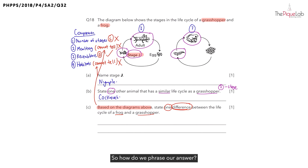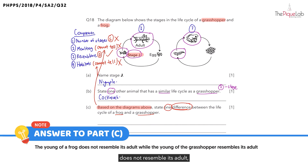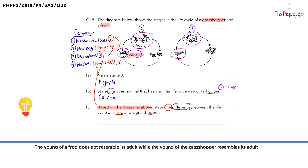So how do we phrase our answer? We should say that the young of the frog does not resemble its adult, while the young of the grasshopper resembles the adult. And that's the answer for part C.